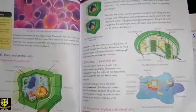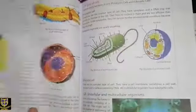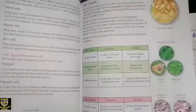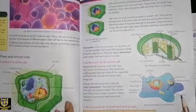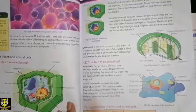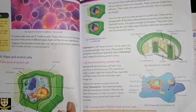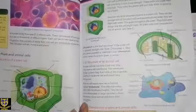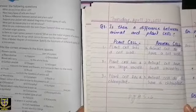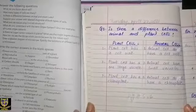This is the plant cell diagram. You have to show the differences between plant cell and animal cell. Draw the plant cell, then draw the animal cell next to it. Show the differences in the diagrams. This is on page numbers 5 and 6. We will do the next question in the next video. Allah Hafiz and take care.